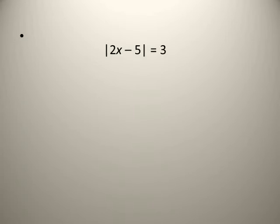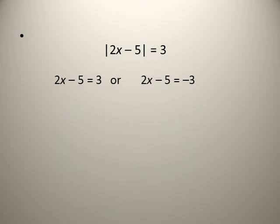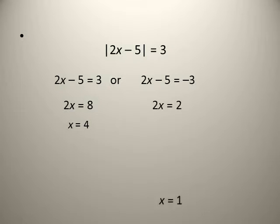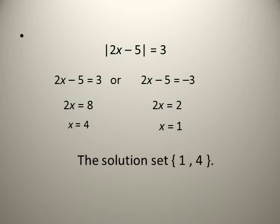Solve |2x − 5| = 3. That means 2x − 5 = 3 or 2x − 5 = −3. First equation: 2x = 8, so x = 4. Second: 2x = −3 + 5 = 2, so x = 1. The solution set is {1, 4}.